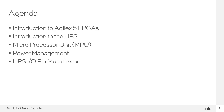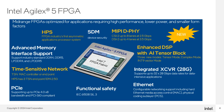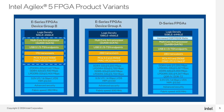The Intel Agilex 5 FPGA product family extends the innovations of the Intel Agilex FPGA portfolio to mid-range FPGA applications, serving a broad range of applications that require high performance, lower power consumption, smaller form factor, and lower logic densities. The first-enhanced DSP with a tensor block in the industry delivers high-efficiency AI and digital signal processing (DSP). The Agilex 5E series is optimized for power and size, ideal for intelligent applications at the edge and embedded markets.